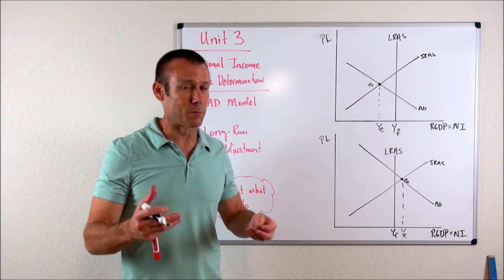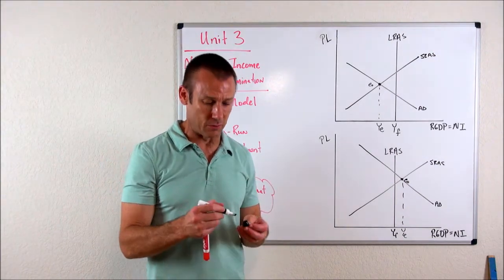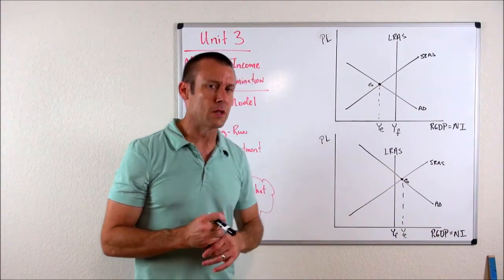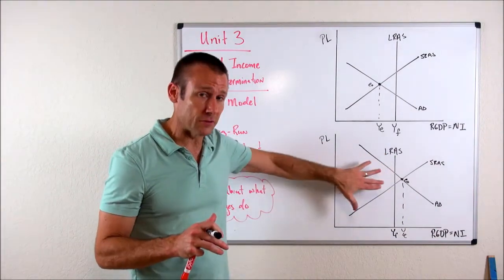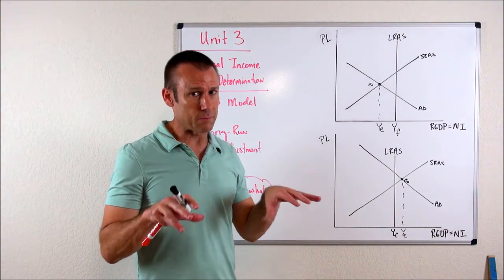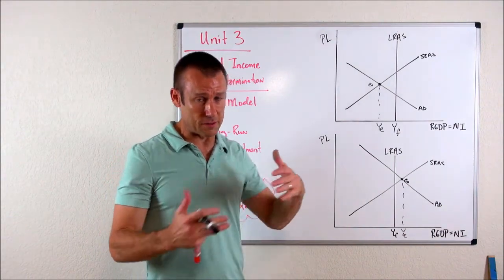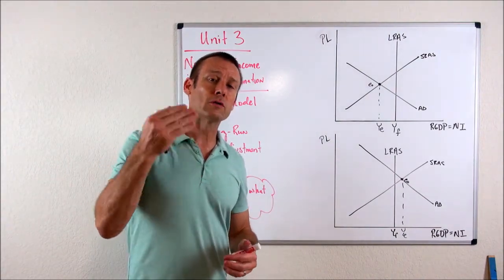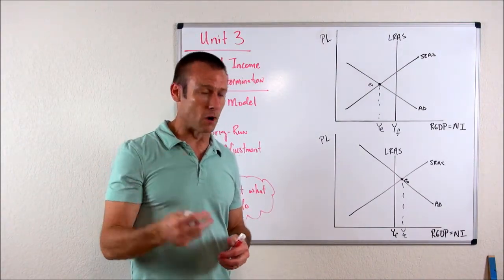Technically speaking, we're producing more than our potential output, which is a little bit weird. How can you produce more than your potential output? And you can in this graph. A PPF, you can't. So the PPF model, you can't produce more than the PPC. You can't produce outside the PPC. But in this graph, you can, but you can only do so in the short run.